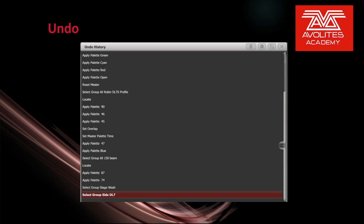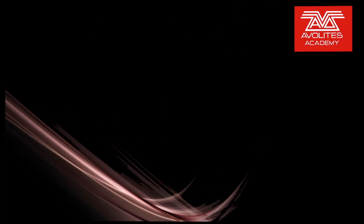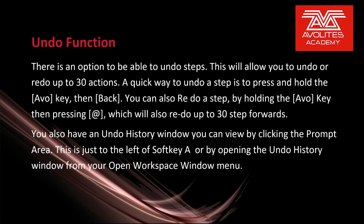Hi everybody and welcome back to Mission Control for a feature focus video. In this video we're going to discuss undo. There's an option to be able to undo steps. This will allow you to undo or redo up to 30 actions. A quick way to undo a step is to press and hold the AVO key and then back. You can also redo a step by holding the AVO key and pressing the AT key, which will also redo up to 30 steps forward.